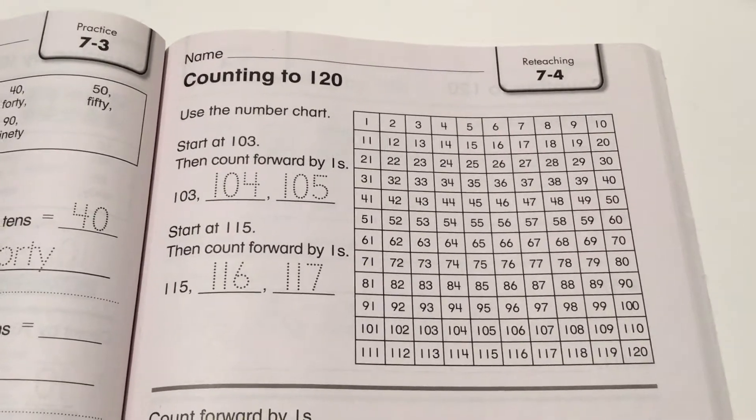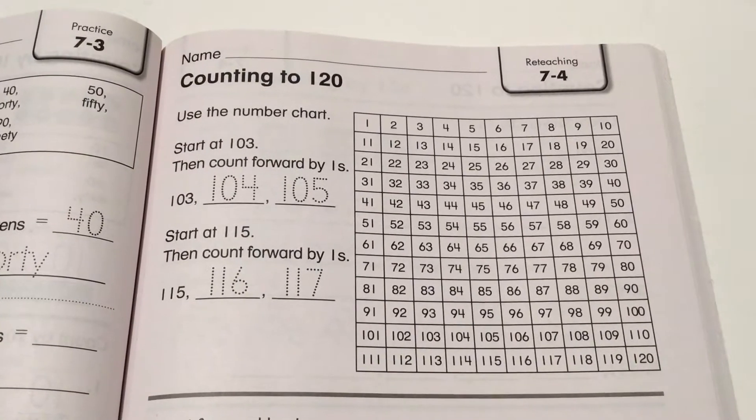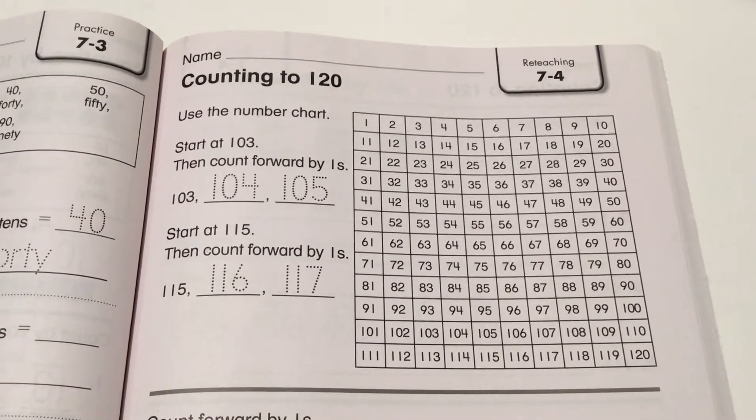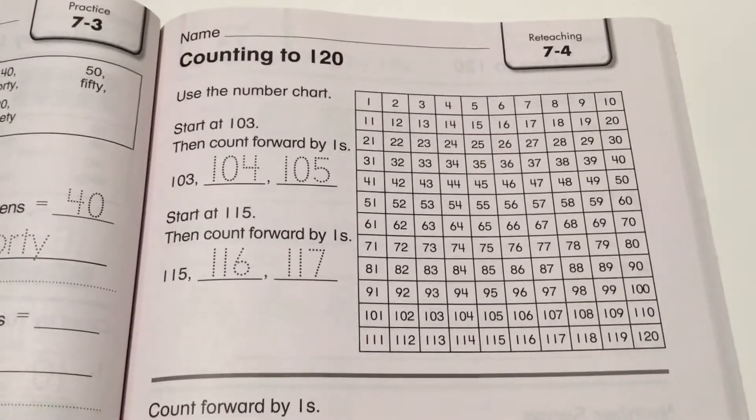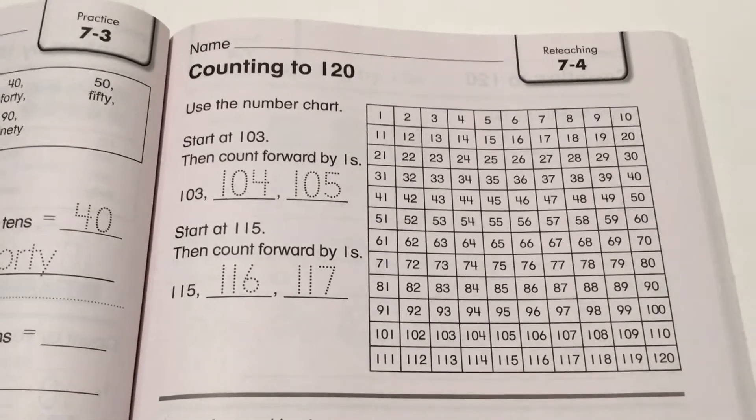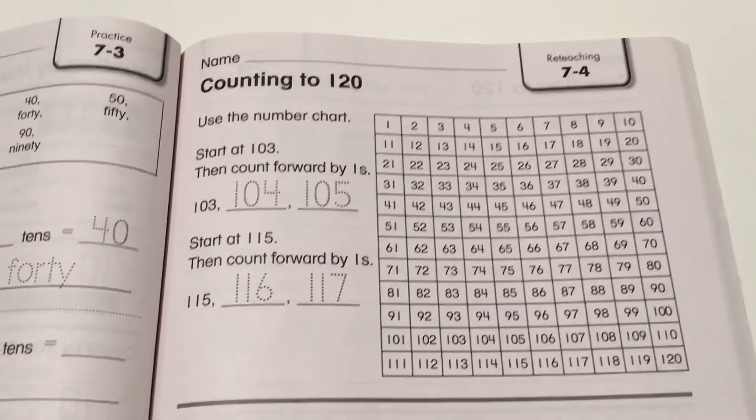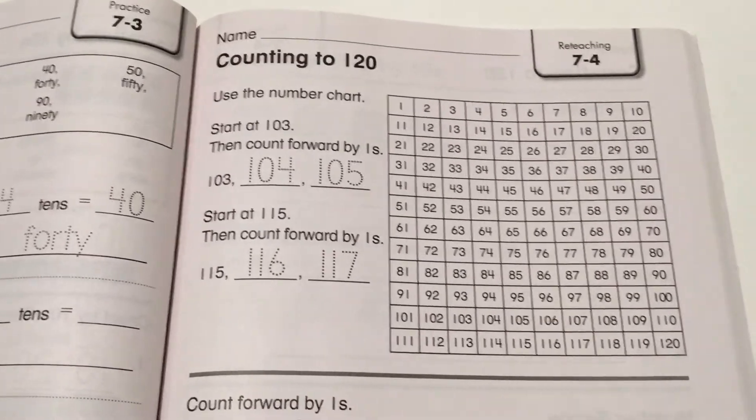Hello happy first graders, this is math lesson 7-4, counting to 120. You're going to use the number chart to count the next numbers. Again, this is something we've been doing on our calendar since the beginning of the school year.